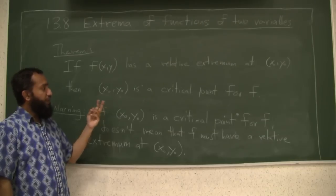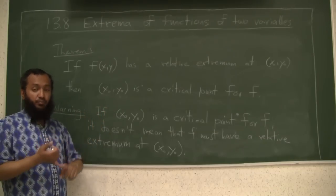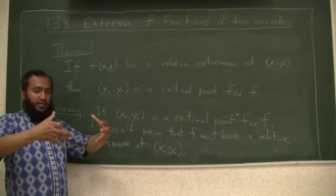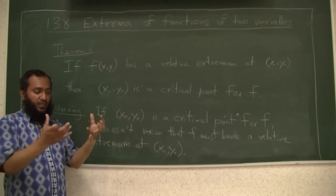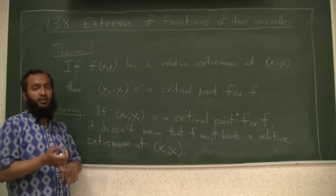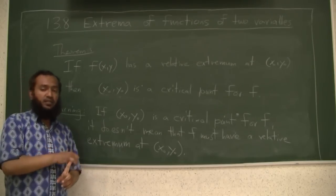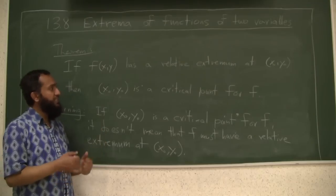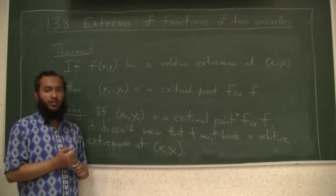We are going to take our partial derivatives, check where they're both 0 or check where at least one fails to exist. That will let you solve for a whole bunch of points. That collection of points will be your candidates for relative extrema. Then you will check each one of them if there will be relative maximum or minimum or neither. We will do a couple of maybe two or three examples actually to see how that works.